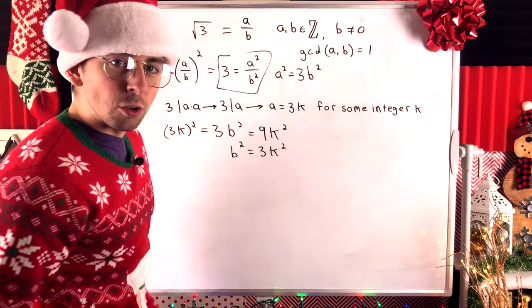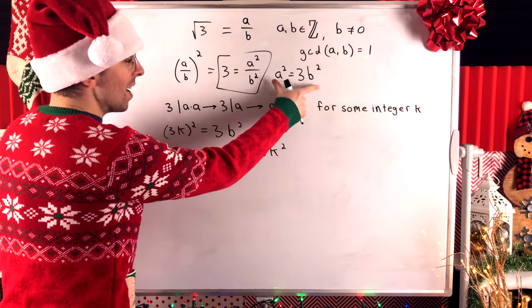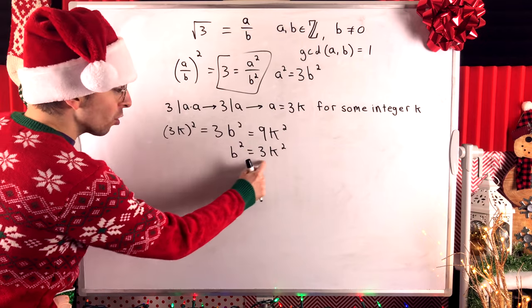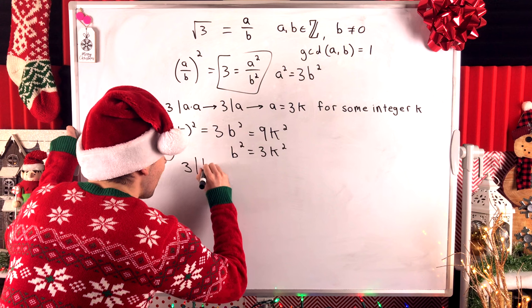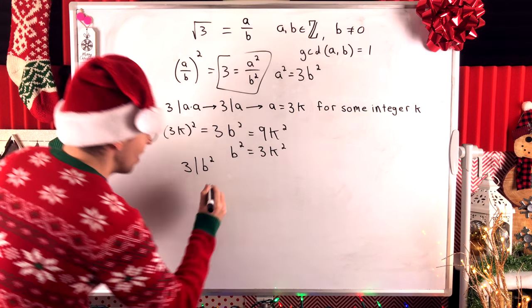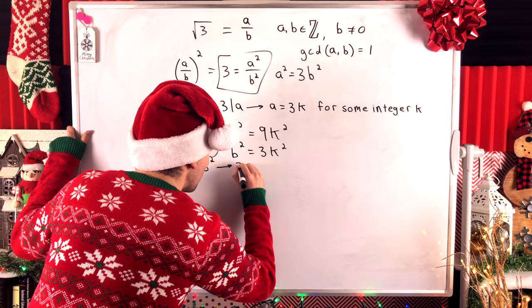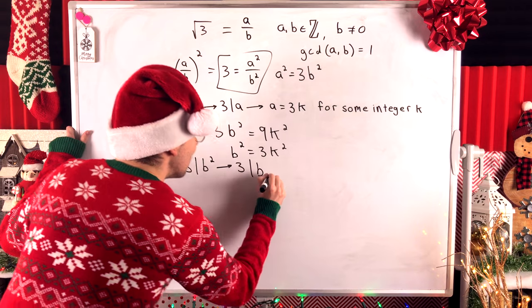We're now at the same sort of situation we just were with A. Since B squared is an integer multiple of 3, this means that 3 divides B squared, by definition. But then, by Euclid's Lemma, that means that 3 divides B.